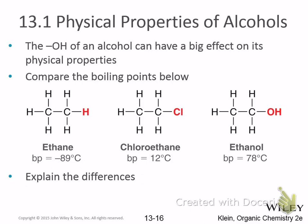The OH of an alcohol can have a big effect on physical properties. Why does ethanol have a higher boiling point than ethane? Intermolecular forces — hydrogen bonding. Why does chloroethane have a higher boiling point than ethane? Dipole interactions, and one other thing — it's larger, higher molecular weight, more polarizable. So we look at polarizability.